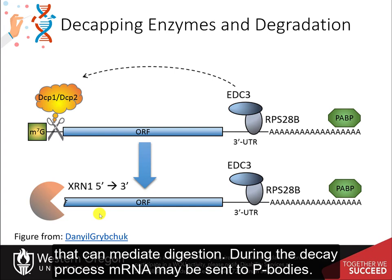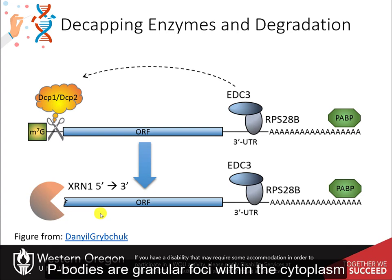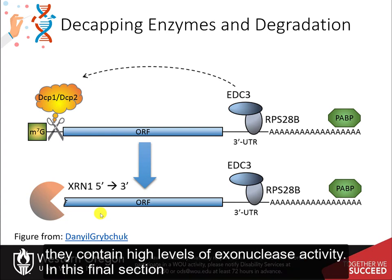During the decay process, messenger RNAs may be sent to P bodies. P bodies are granular foci within the cytoplasm that contain high levels of exonuclease activity.